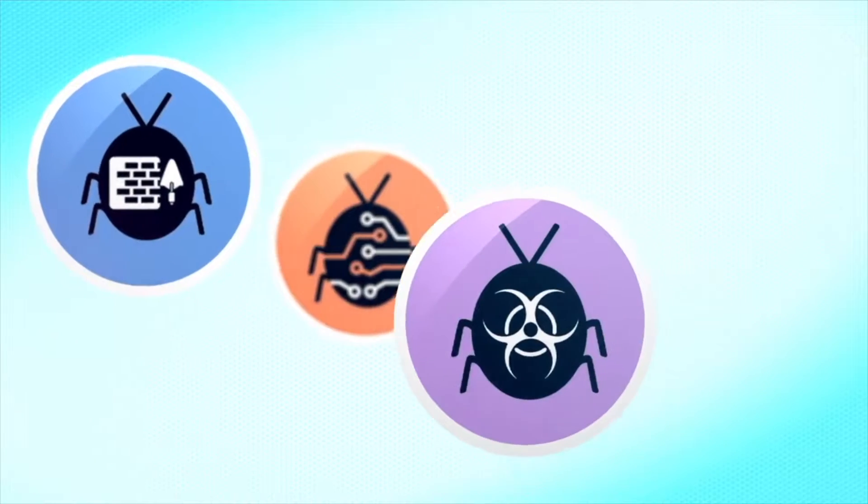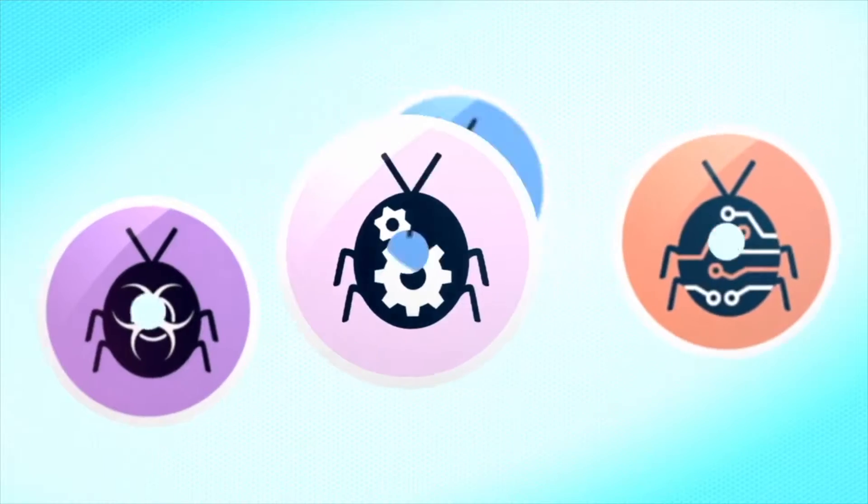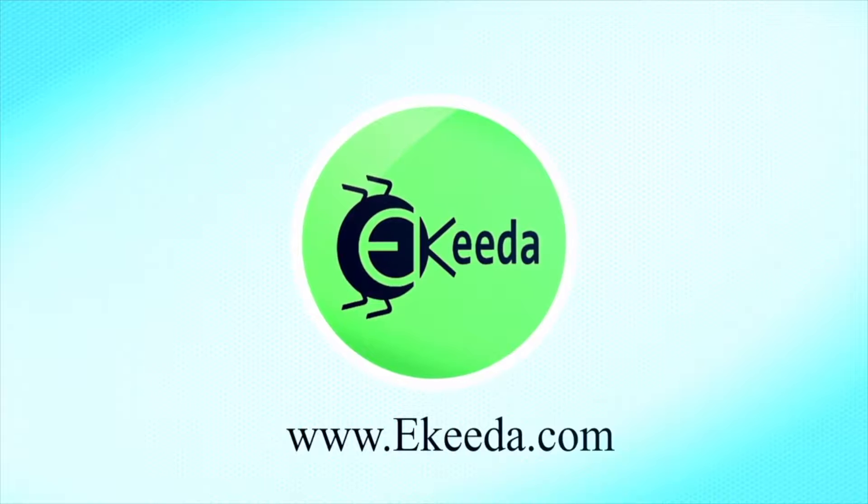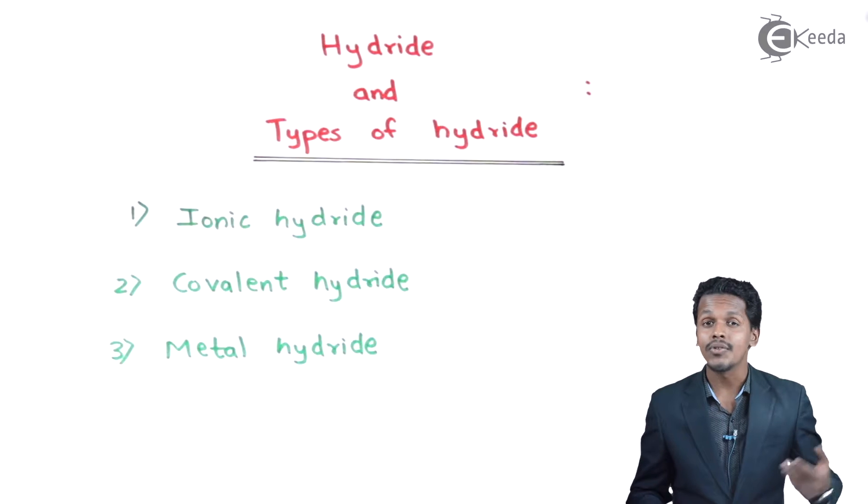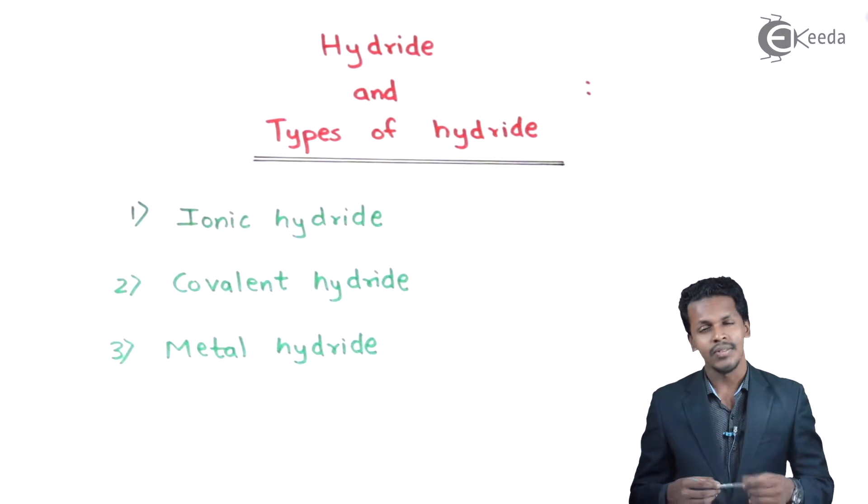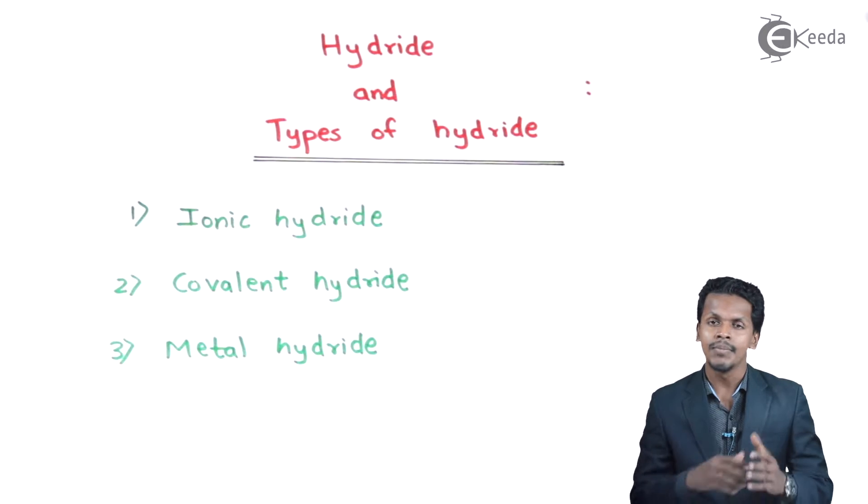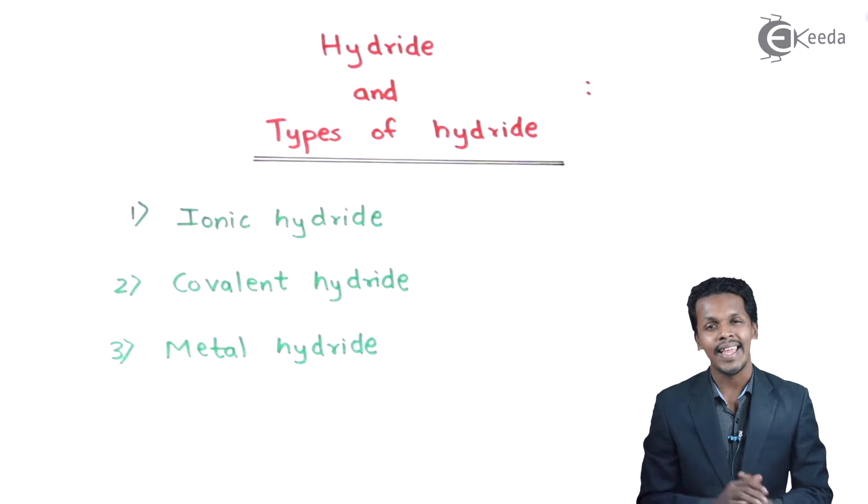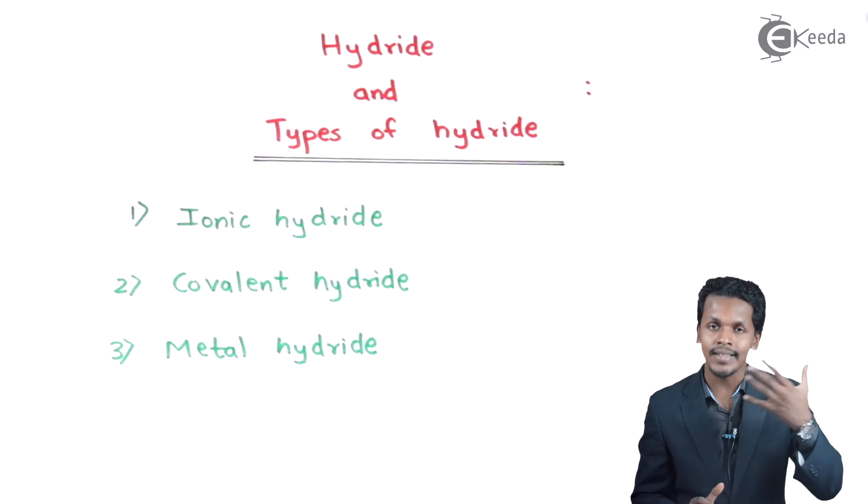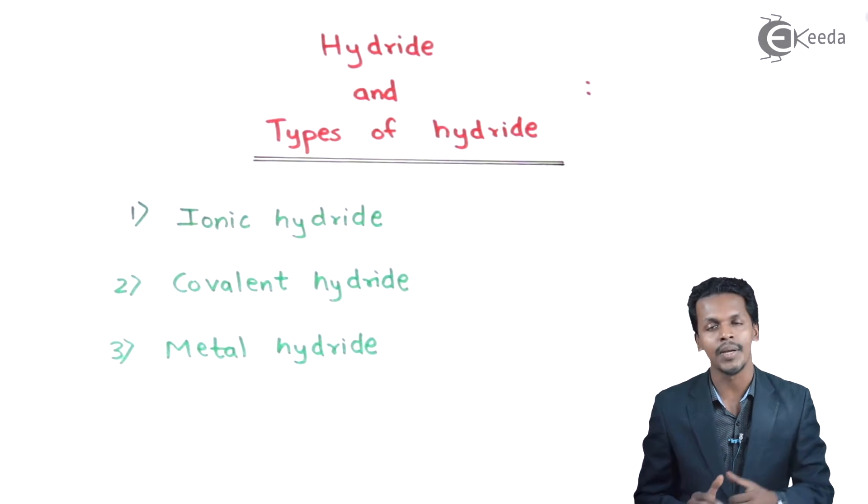Let us talk about what is hydride. Most of the elements in the periodic table can easily combine with hydrogen under particular conditions to form a binary compound. This binary compound consists of hydrogen as well as the other element to which the hydrogen is forming a bond. These are basically known as hydrides.